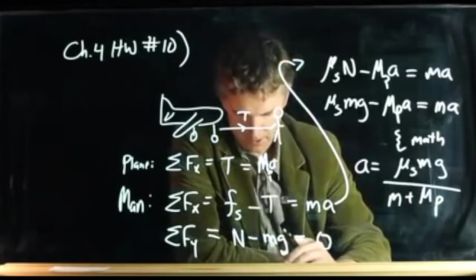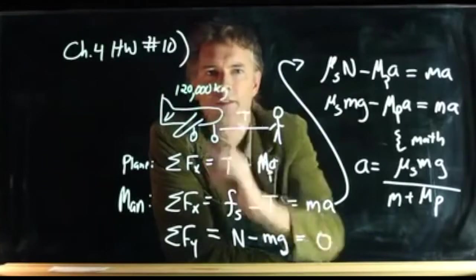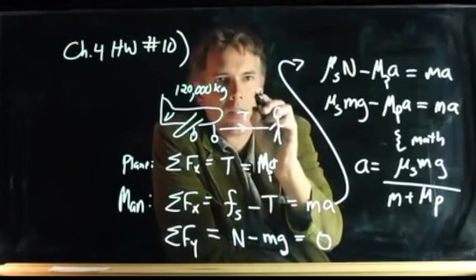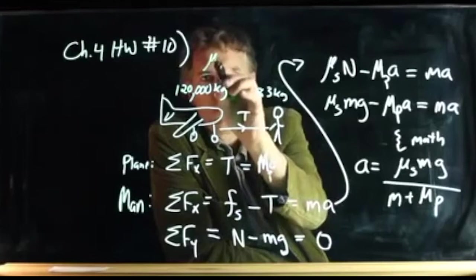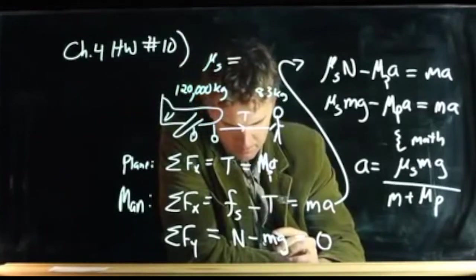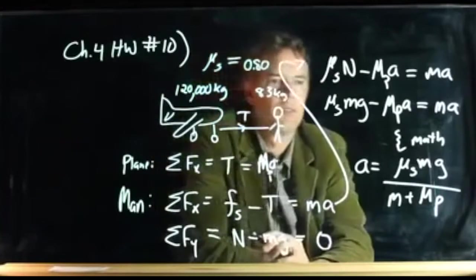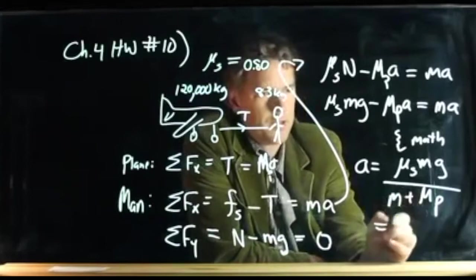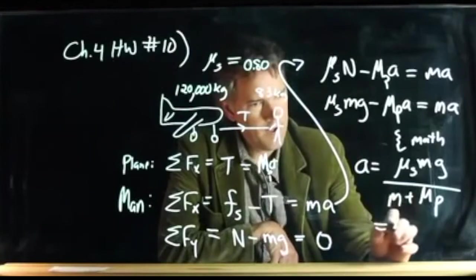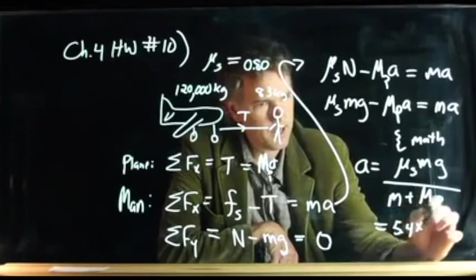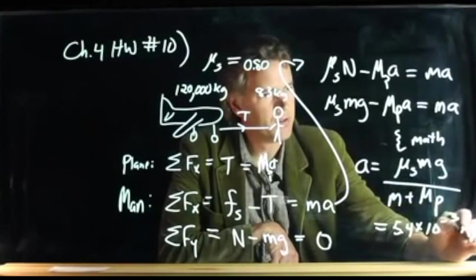Let me give you the numbers from my problem: the mass of the plane is 120,000 kilograms, the mass of the man is 83 kilograms, and mu_s, the coefficient of friction, is 0.80. If you put all of those numbers into the equation for A, you should end up with 5.4 times 10 to the minus 3 meters per second squared.